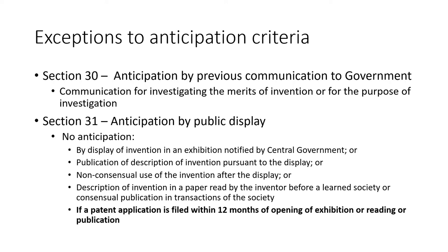Section 31 deals with exceptions to anticipation by way of public display. There would be no anticipation if the invention has been displayed in an exhibition notified by the central government, or if there is a publication of a description pursuant to that display — for example, pamphlets circulated at the exhibition. A non-consensual use of the invention after the display would also not be considered anticipation. Similarly, a description read by the inventor before a learned society or published in the journal of that society is not anticipation.